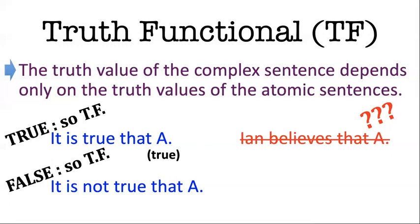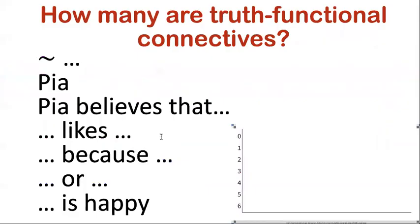So that's the basic concept of truth functionality: does just the truth value of the input matter, or does other stuff matter too — like facts about the world, facts about what A means, etc.? I'm going to go through some examples and tell you exactly which ones are truth functional and which ones are not.